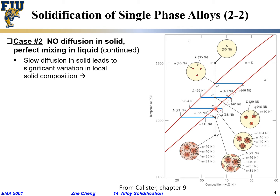If I cool further down to just barely above the solidus, the solid composition at the interface between liquid and solid will be about 38 percent nickel. So the microstructure now has solid within liquid: the dead center is still 46, slightly outside is 40, and further outside is about 38 percent.